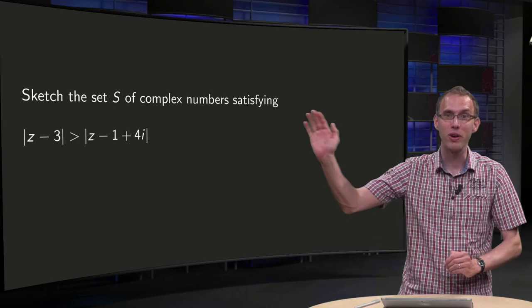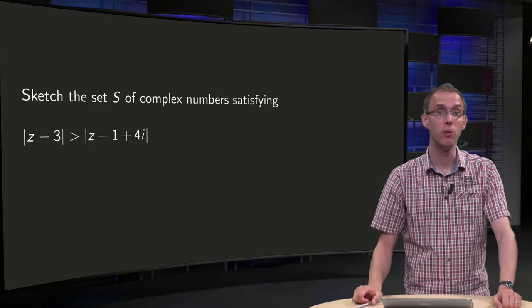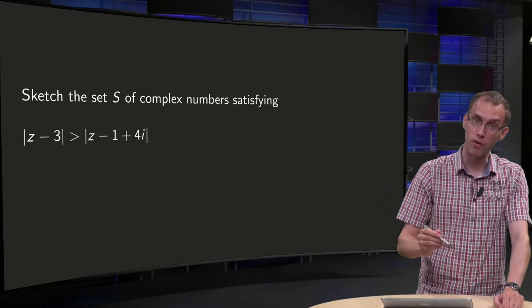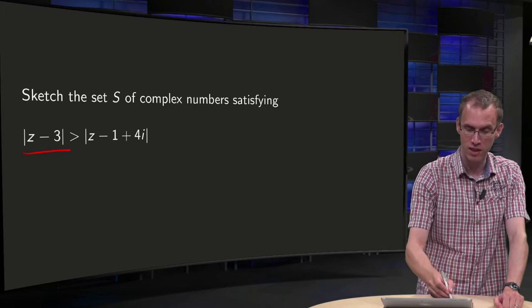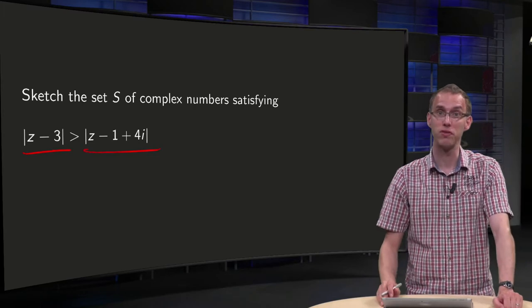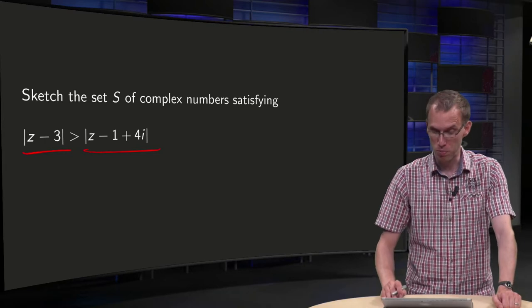Try to determine the following region in the complex plane first, and then look in this video whether you did it correctly. So we are looking for points z such that the norm of z minus 3 is bigger than the norm of z minus 1 plus 4i.